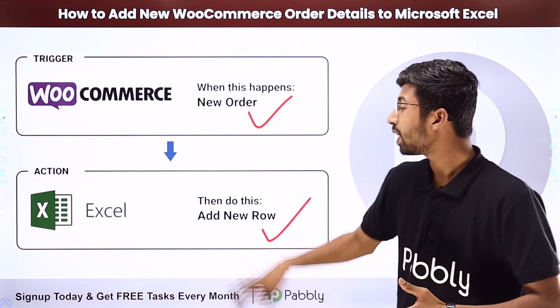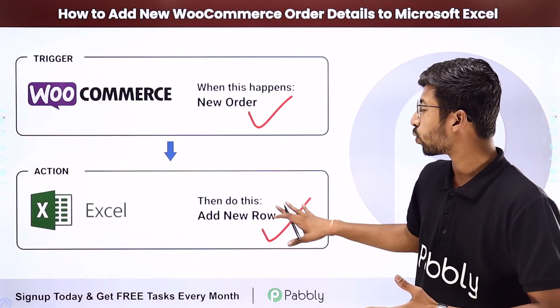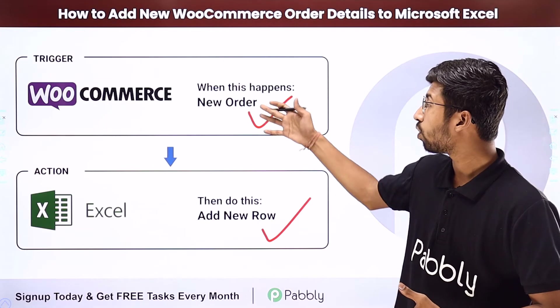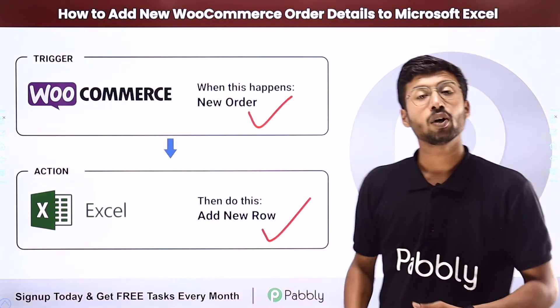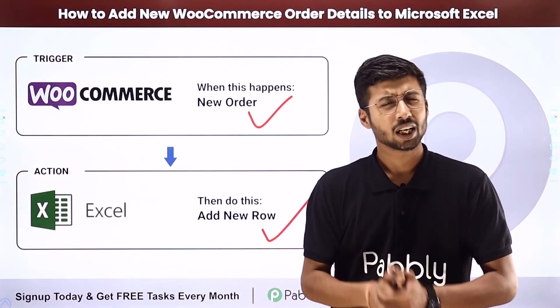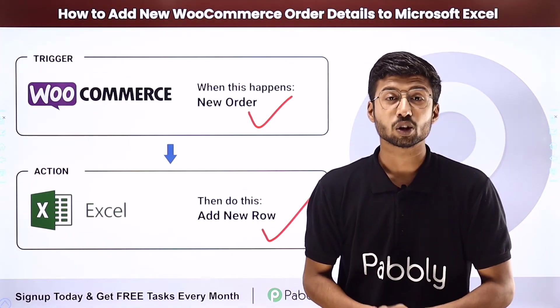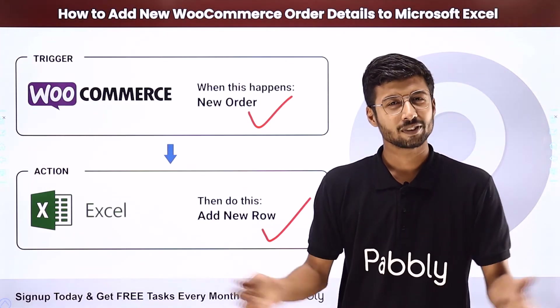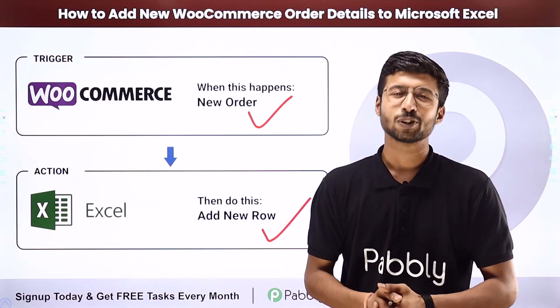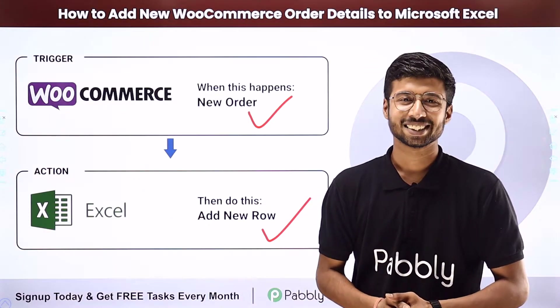The action will be the addition of a new row — addition of new order details into MS Excel. How can you set up this automation for yourself? To know this, come with me to my screen.